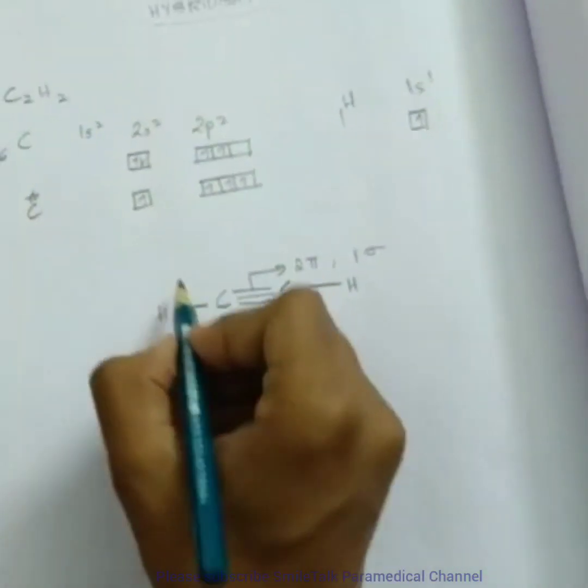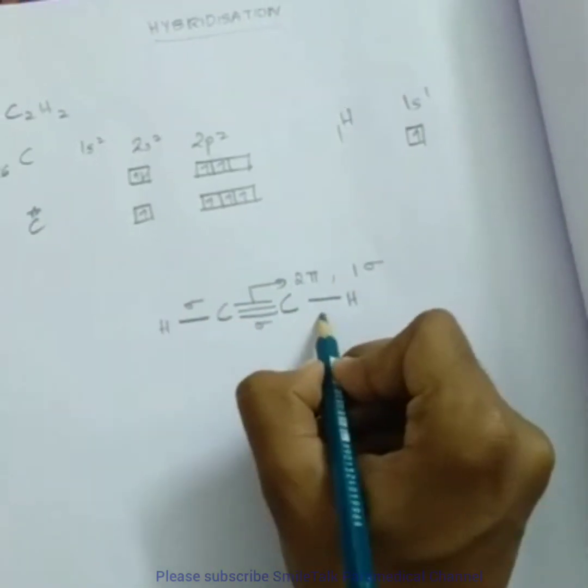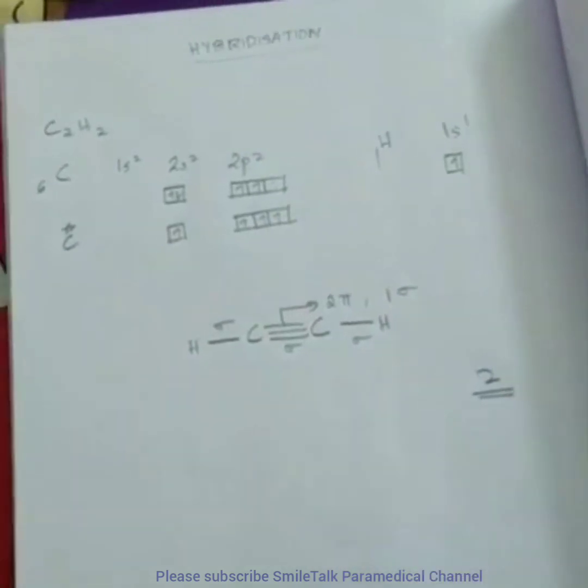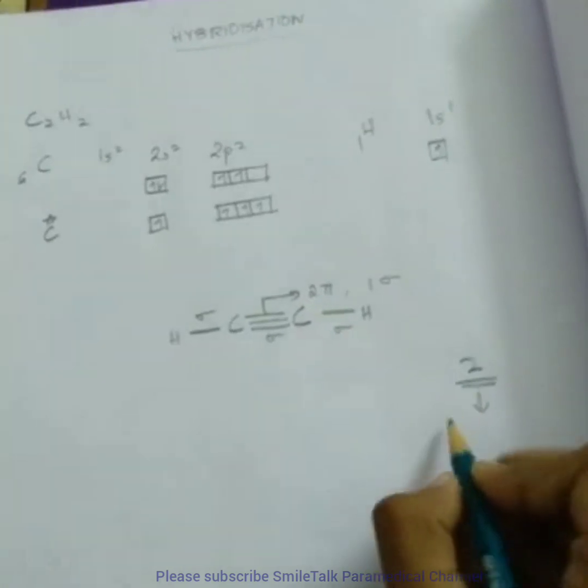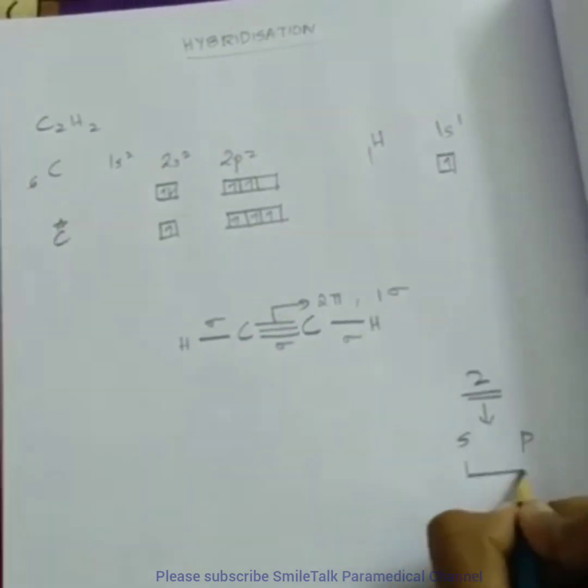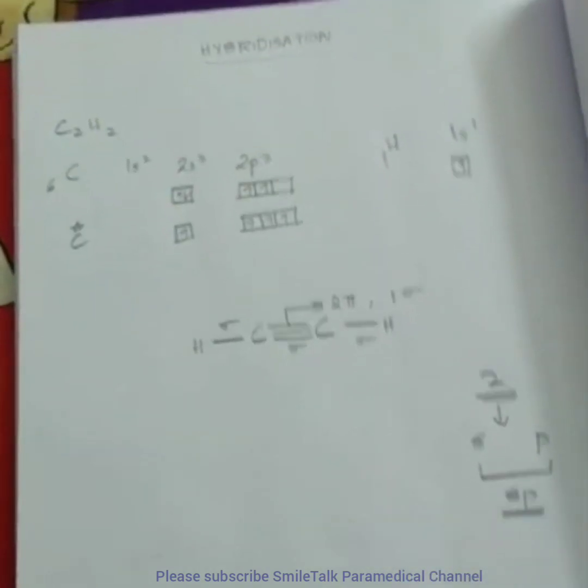So we require two hybrid orbitals. And thus in these two hybrid orbitals we have one s orbital and one p orbital, and thus we see that it is sp hybridization.